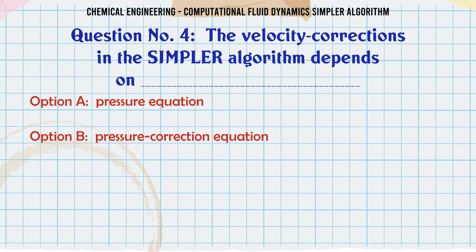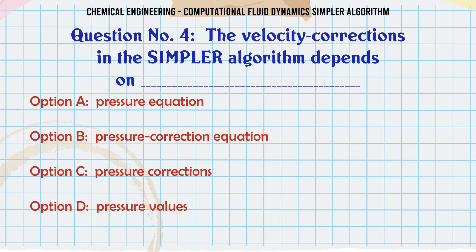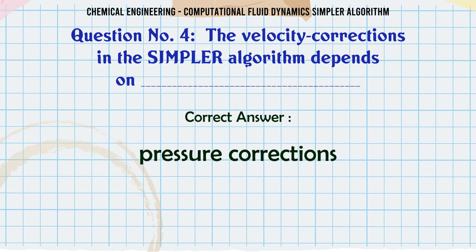The velocity corrections in the SIMPLER algorithm depend on pressure corrections. Which of these equations is used in the SIMPLER algorithm for updating the pressure values?